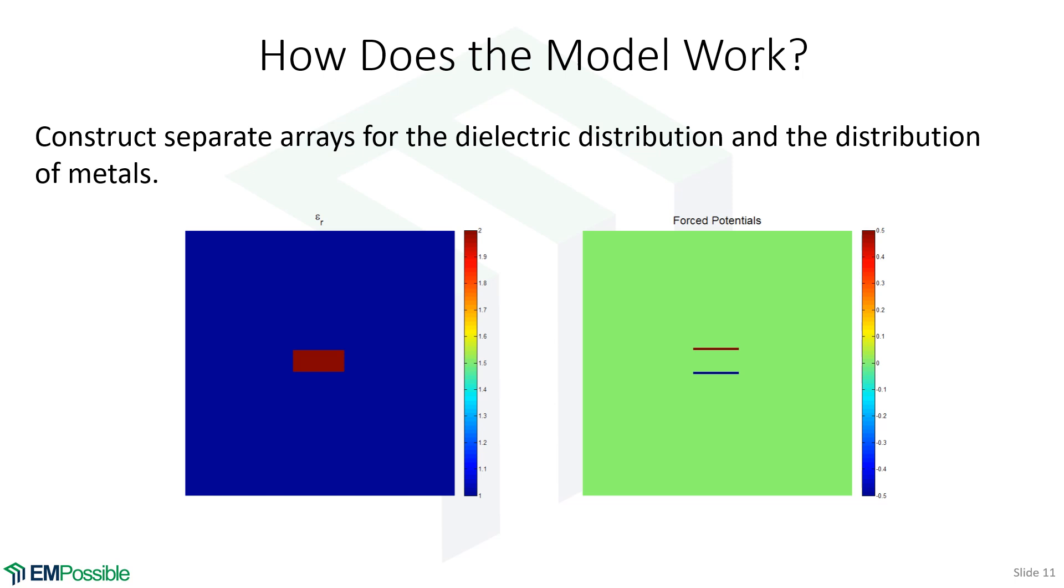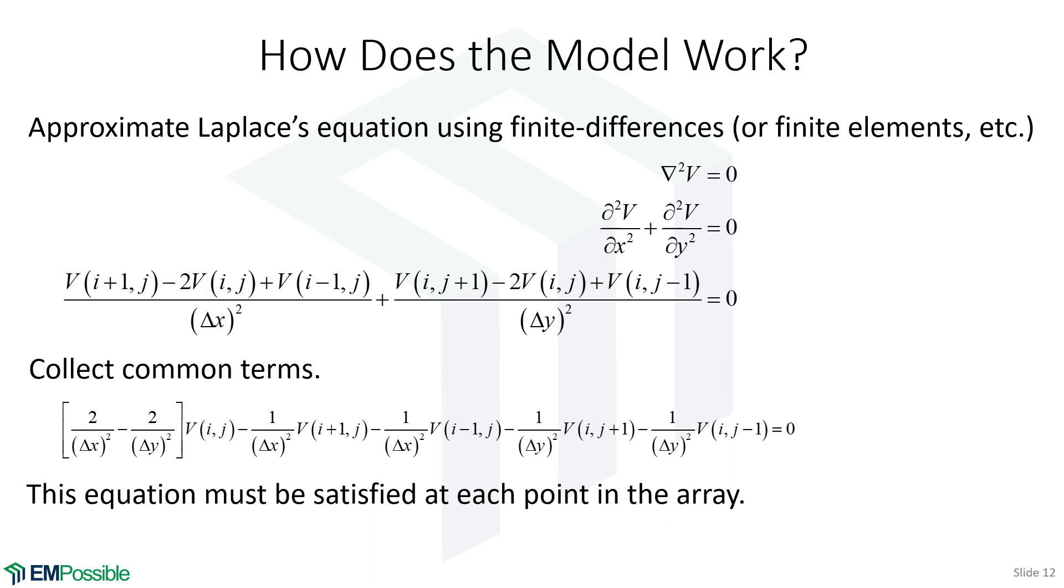So I feed my code two different arrays, and those are very easy to draw. Now, from there, we would like to solve Laplace's equation. And so we're just looking at the cross-section of this device. So I just need an X and Y. It's a two-dimensional analysis. So here's the scalar Laplacian decomposed in just X and Y components.